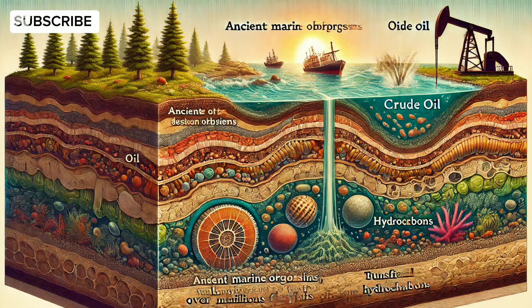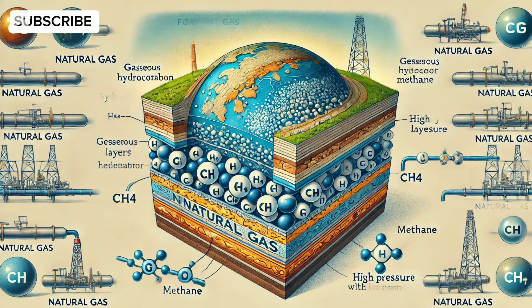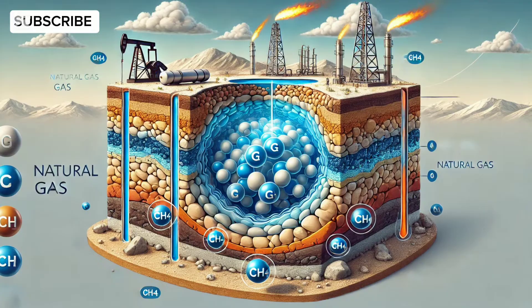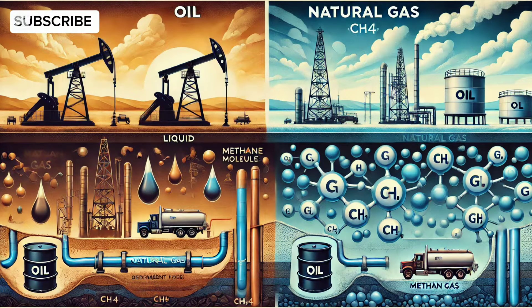Oil, also known as crude oil, is a liquid hydrocarbon formed from the remains of ancient marine organisms buried under sedimentary layers for millions of years. Natural gas, on the other hand, is a gaseous hydrocarbon primarily composed of methane, formed under similar conditions but with different chemical processes and pressures. While both are fossil fuels, their physical states, compositions, and formation conditions set them apart from the start.